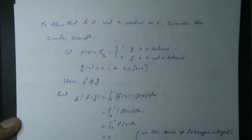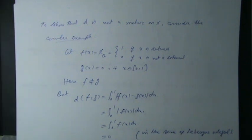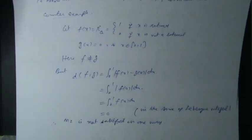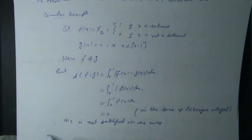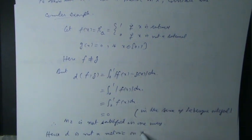Therefore the metric axiom M2 — that d(f,g) equals zero implies f equals g — is not satisfied. Hence D is not a metric on X.